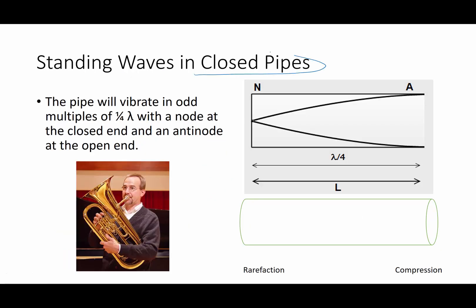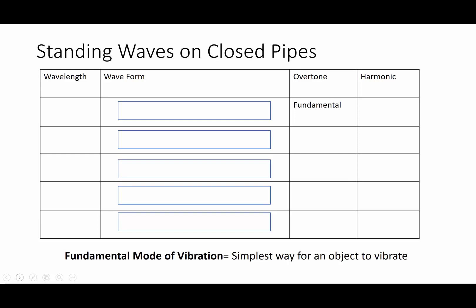Next we're going to talk about closed pipes. Now in a closed pipe, this is very often a wind instrument where one end of the wind instrument is tight against your mouth, and then the rest of it, the air can be compressed and rarefied out the other end of the instrument. The fundamental mode of vibration for a closed pipe is one quarter wavelength with a node at the closed end and an anti-node at the open end. Again, we're drawing this as if it's a transverse wave, but we're talking sound waves. So these are longitudinal or compression waves. So at the closed end where we have a node, we're going to have a rarefaction, and we're going to have a compression out at the open end of the pipe.